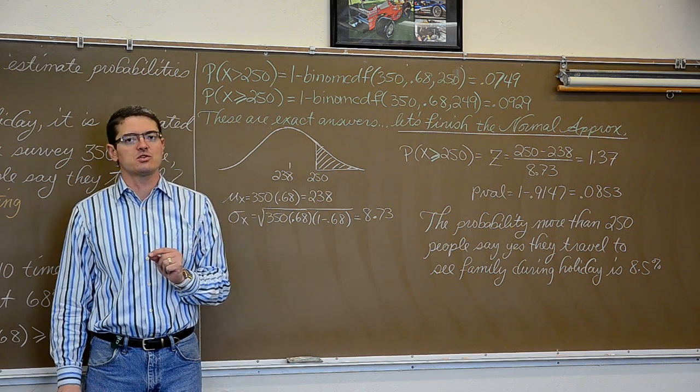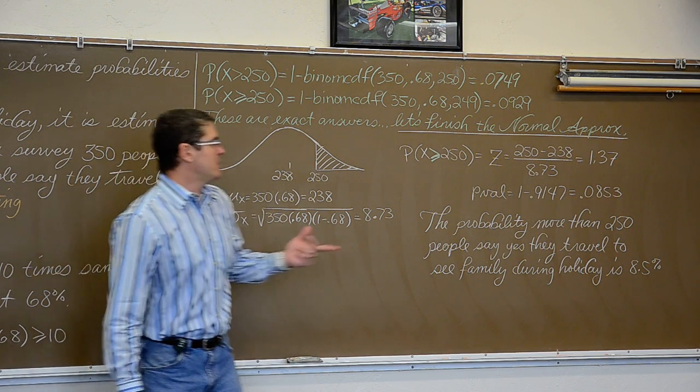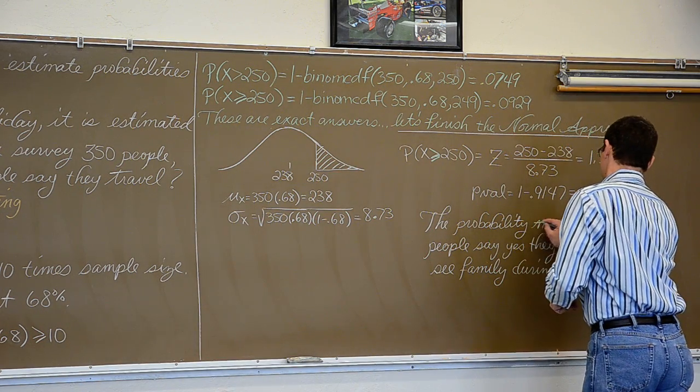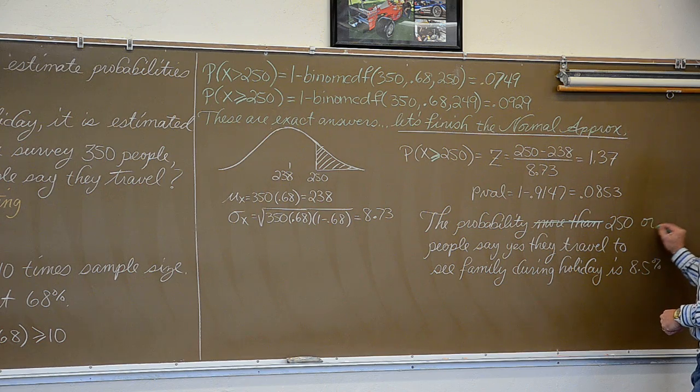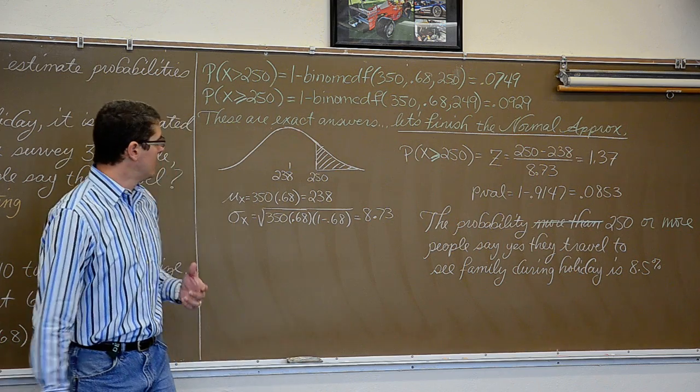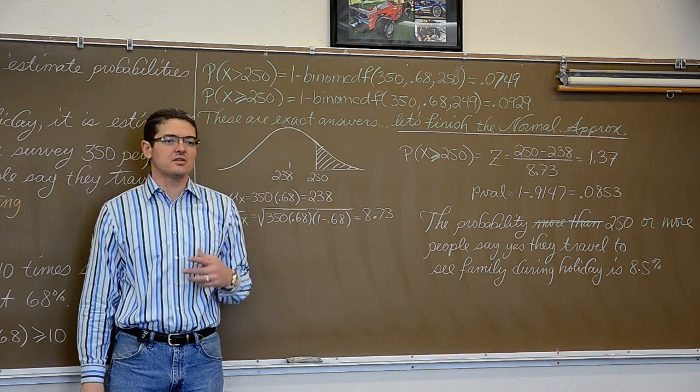Your wording, your language has to match your notation. So now it would be the probability that 250 or more people say they travel to see family out of a sample size of 350. So there you go.